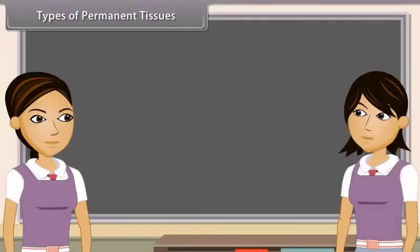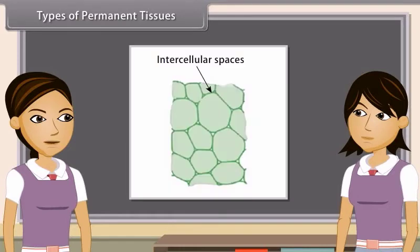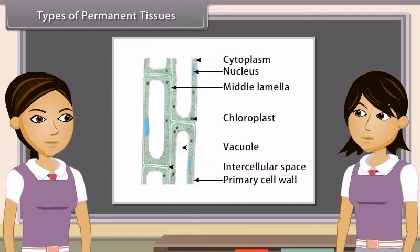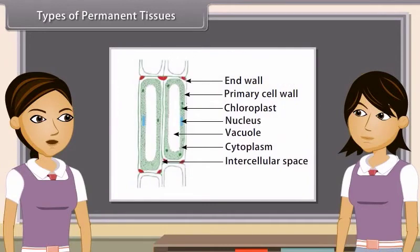Permanent tissues are of two types on the basis of nature of cell: simple permanent tissues and complex permanent tissues. Simple permanent tissues are composed of cells which are functionally and structurally similar.